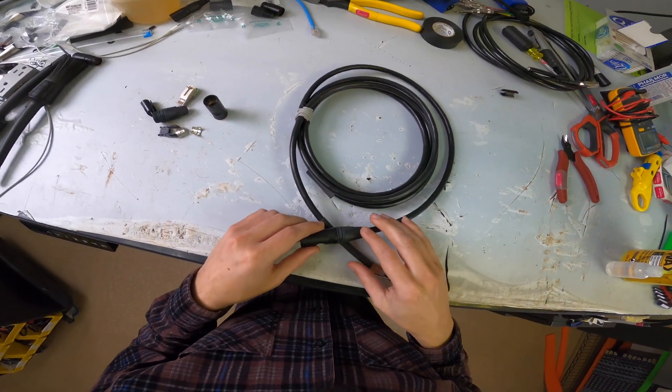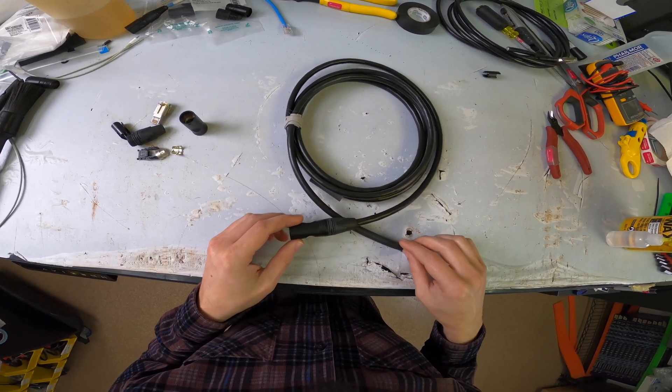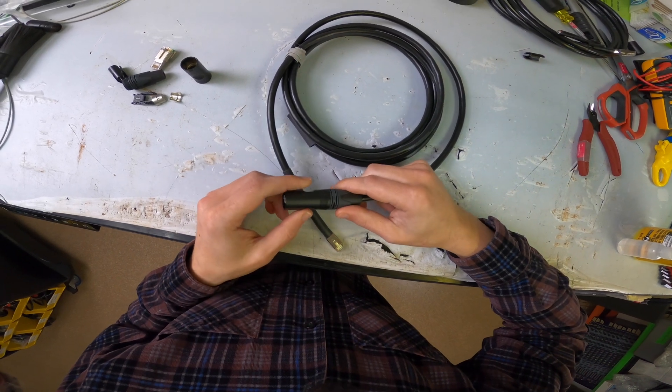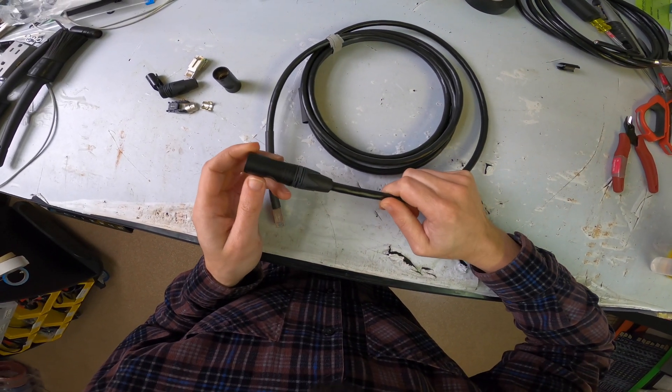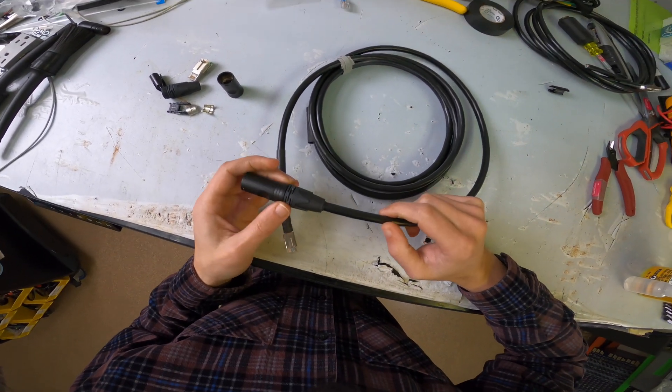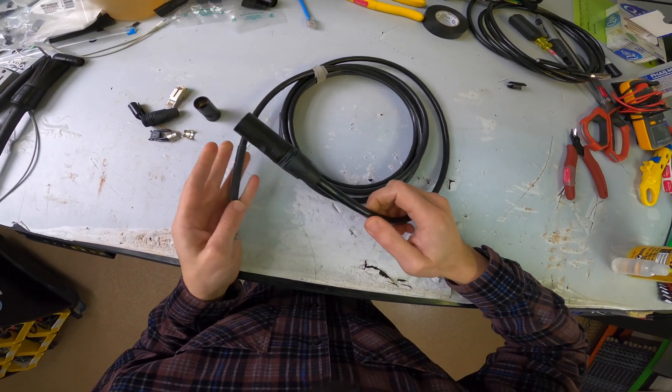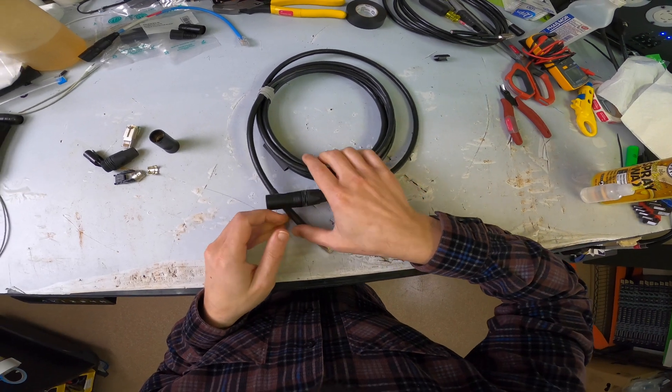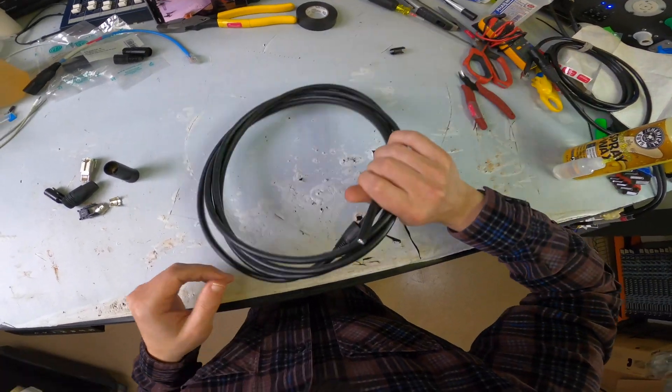Hello everybody! Today we're going to take a look at building the Neutrik NE8MX6-B EtherCon connector, which is about the most hateful EtherCon connector to build out of all of them. They're not super fun, especially when you're using a tactical cat cable, which is what we're doing today. This is a pre-built cable. I've got another one that I just have a scrap cable laying around, so I figured I would just show you how to build this.